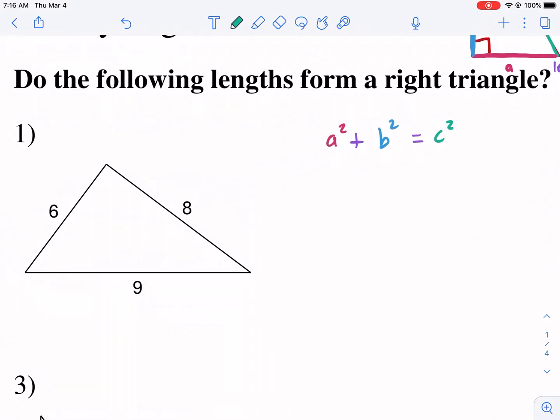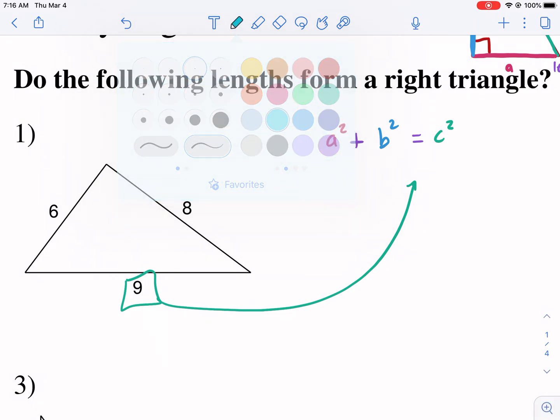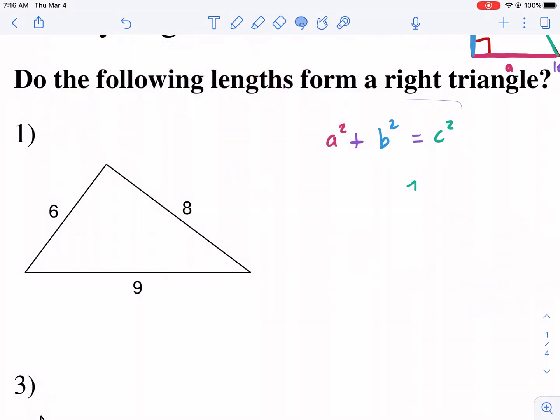And figure out if this is in fact a right triangle. Now, you don't see a right triangle here, your right angle. We don't know if it's a right triangle. So what we're going to do is we're just going to assume that the longest side is going to be the hypotenuse. And that these two smaller sides are going to be the legs. So in our formula here, I'm just going to copy and paste it again. I'm going to reference it multiple times.